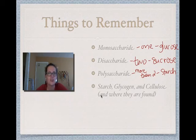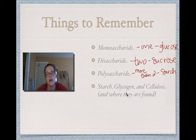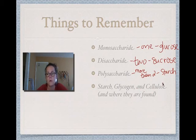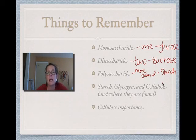Starch, glycogen, and cellulose — you need to know the difference between those, which is where they are found. Starch is in plants, glycogen is in animals, and cellulose is structural for plants as well. Cellulose is important because it's a gut brush, helping to keep animals healthy by cleaning out their intestines and keeping them clean. It's also used for plant cell walls, and animals cannot digest it.